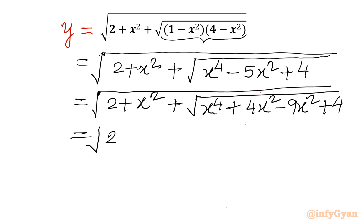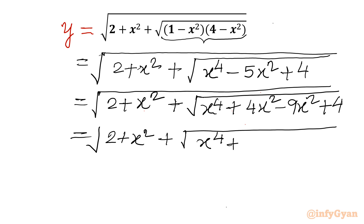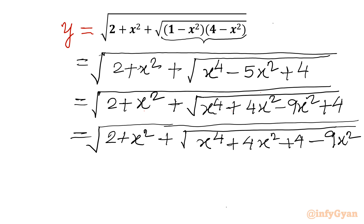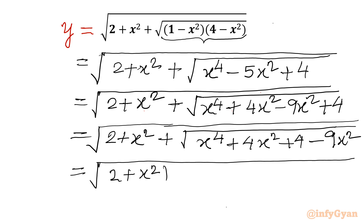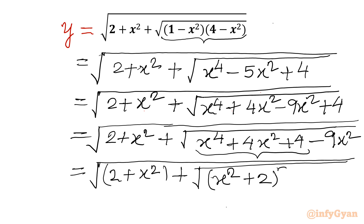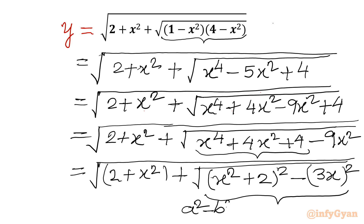Now, -5x² can be written as +4x² - 9x². So inside the radical we have x⁴ + 4x² + 4 minus 9x². We can recognize x⁴ + 4x² + 4 as a perfect square — it is (x² + 2) whole square. And 9x² can be written as (3x) whole square. Now I will apply the difference of two squares identity: a² - b² = (a + b)(a - b).